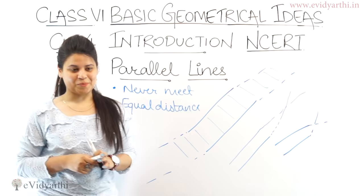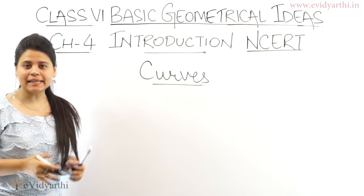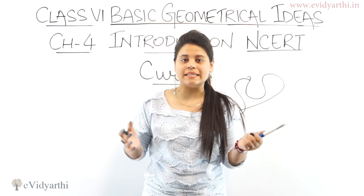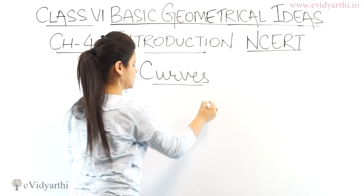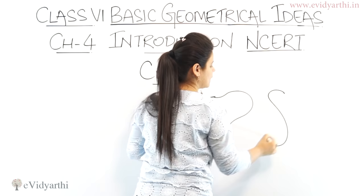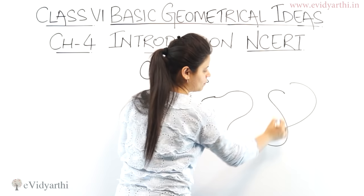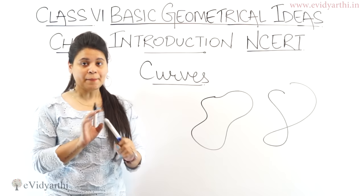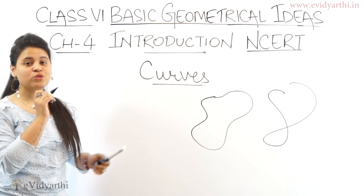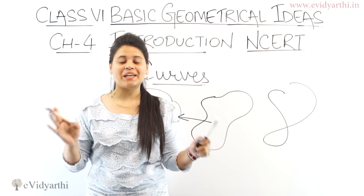The next topic is curves. What are curves? Curves are simply like doodling — randomly drawing anything with a pen. That is what curves are. If I randomly draw something like this, that is a curve. Similarly, another shape I draw is also a curve. Both are curves, but the difference is that one curve crosses itself — it goes over and crosses — while the other one starts at one point and ends at another without crossing. Curves that do not cross themselves are called simple curves.